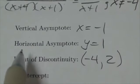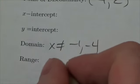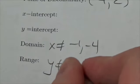My range is going to be affected by my horizontal asymptote and my point discontinuity. So down here, I'm going to say that the range y cannot equal 1 or 2.